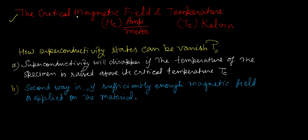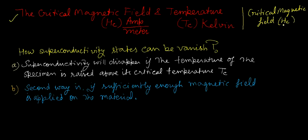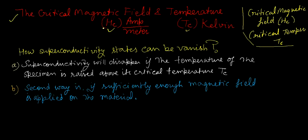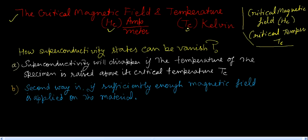Now we define two important quantities: the critical magnetic field and the critical temperature. The critical magnetic field is denoted by HC, and the critical temperature is denoted by TC. The unit of the critical magnetic field is ampere per meter, and the unit of temperature is Kelvin.